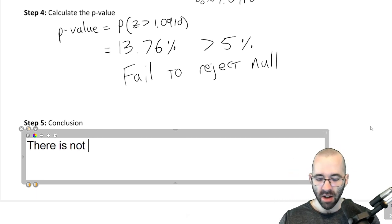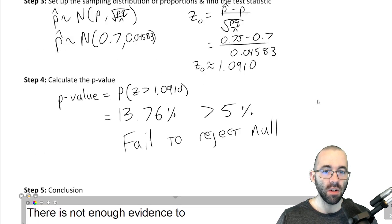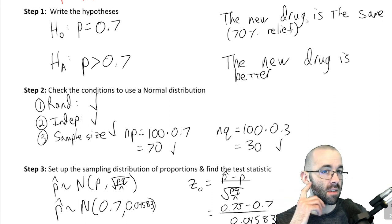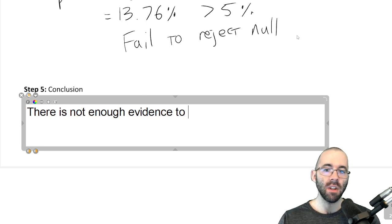There is not enough evidence to reject the null. The null is that the new drug is the same. Rejecting the null, that the new drug is better. So there's not enough evidence to say the new drug is better.